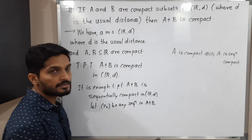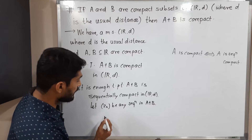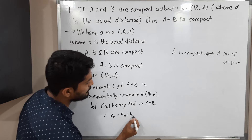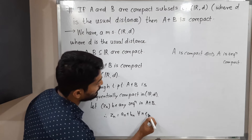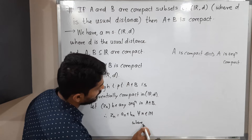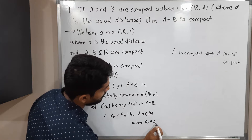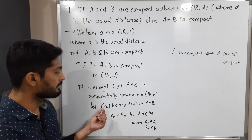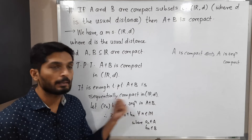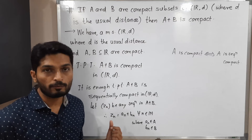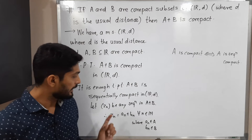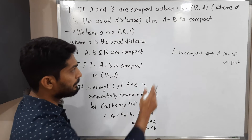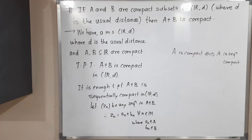Since Zn is a sequence in A plus B, each term of the sequence will be of the form aₙ plus bₙ for all n in the set of natural numbers, where aₙ is an element of A and bₙ is an element of B. So all elements of Zn will be in this form: aₙ plus bₙ.